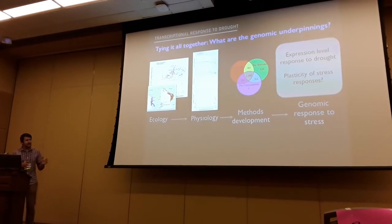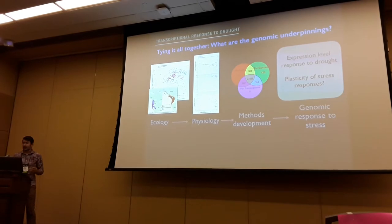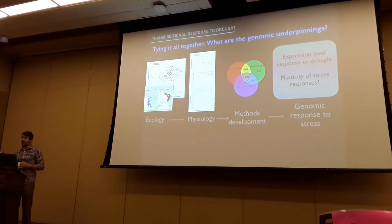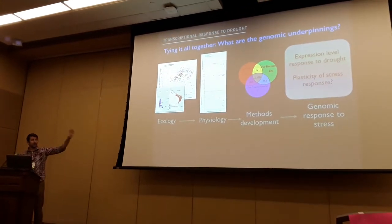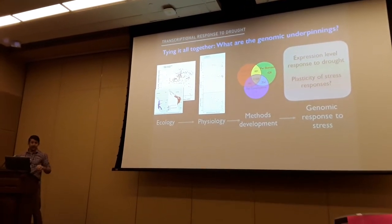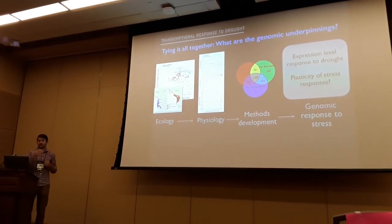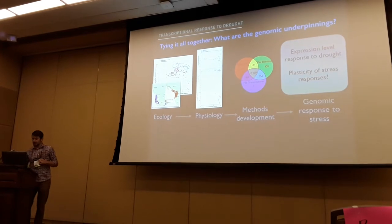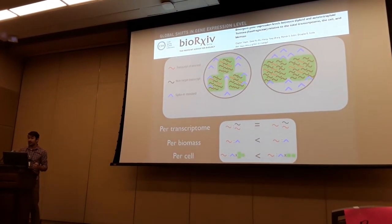That was the basis for the experiment I'm talking about today, where we're looking at the molecular underpinnings of this drought response. We tried to integrate everything: we started with the ecology, validated it with some physiology, then we wanted to look at gene expression change — what's the response to drought, what's the plasticity of the response. One big problem is we're doing diploid and polyploid comparisons.